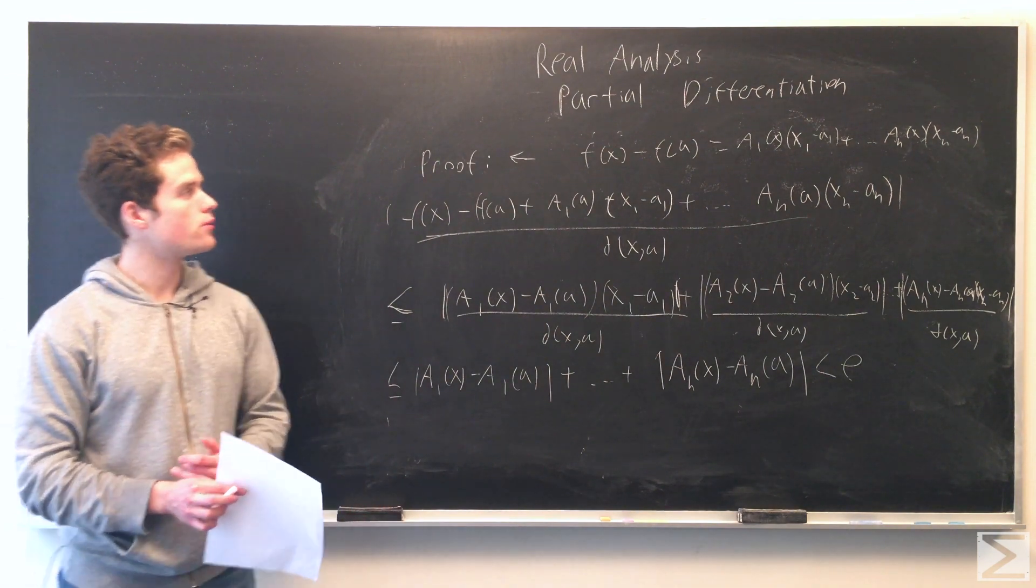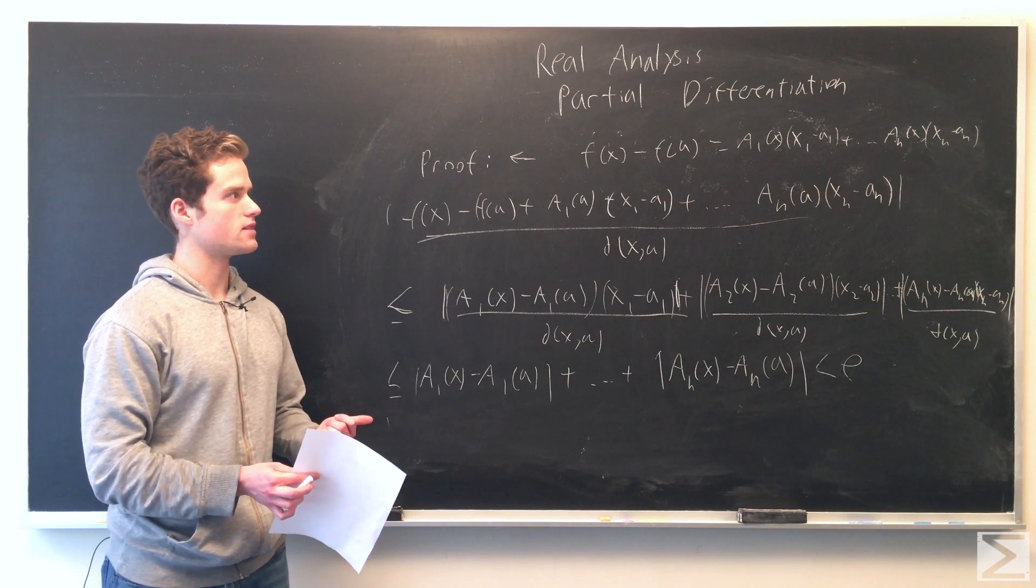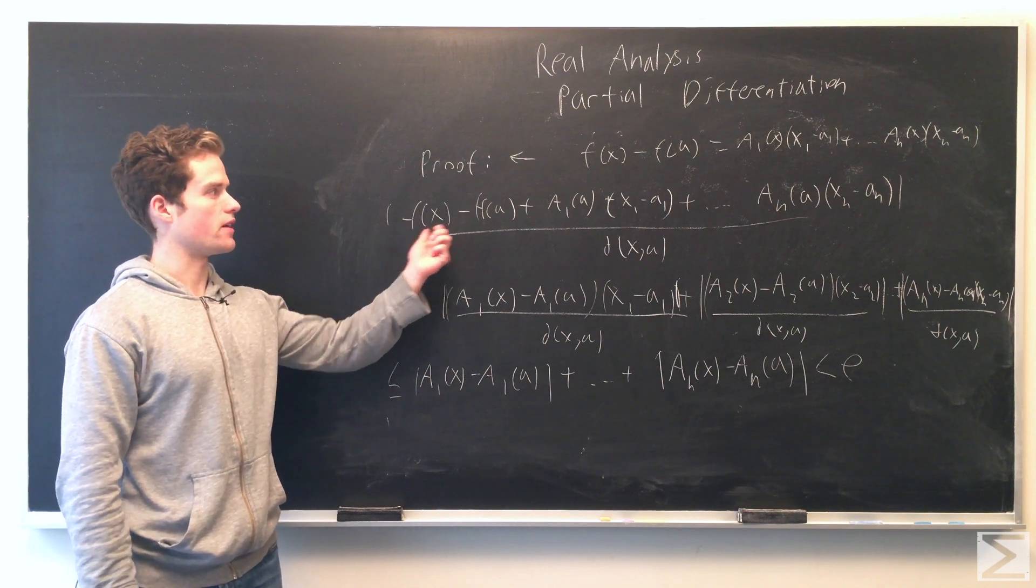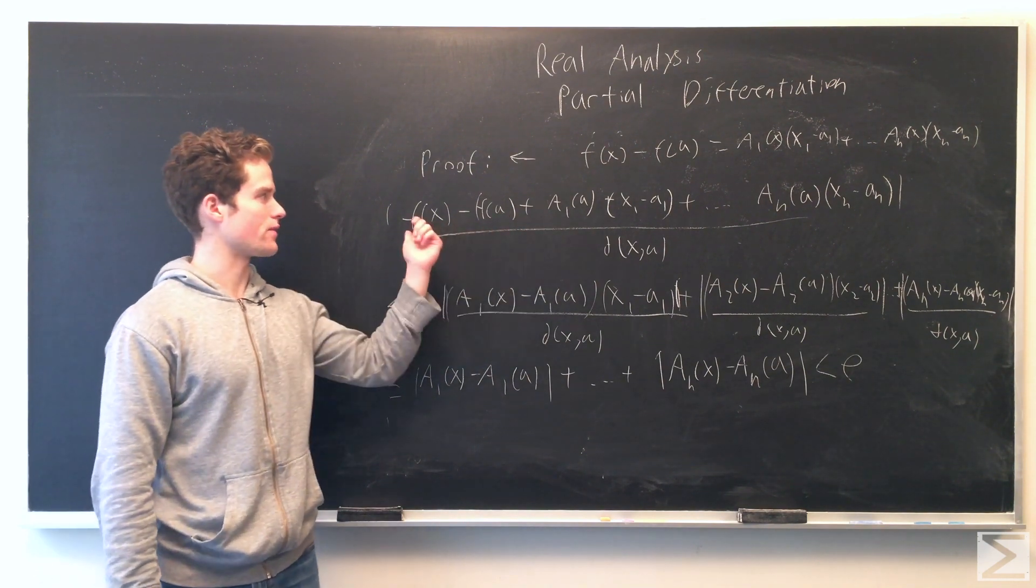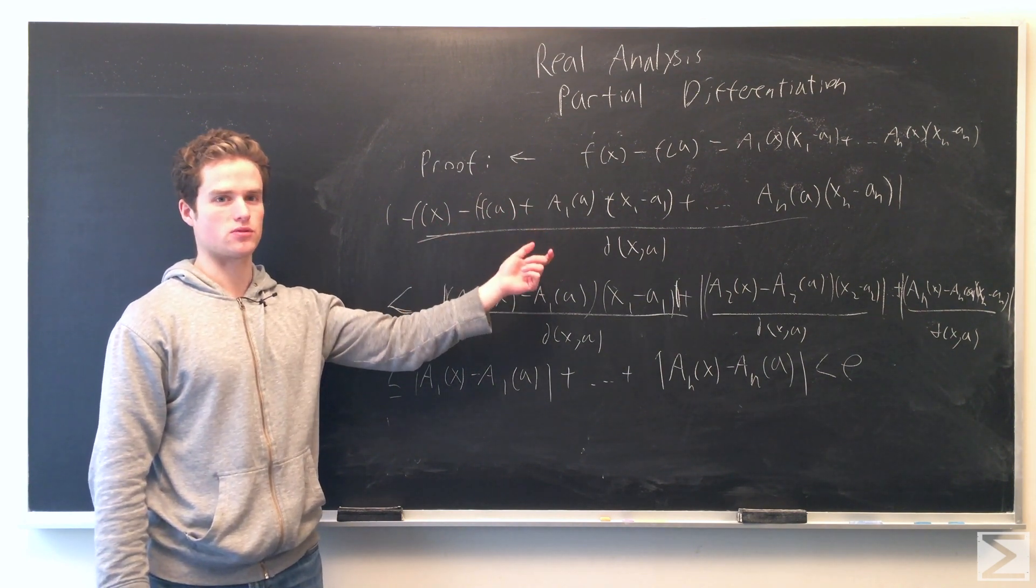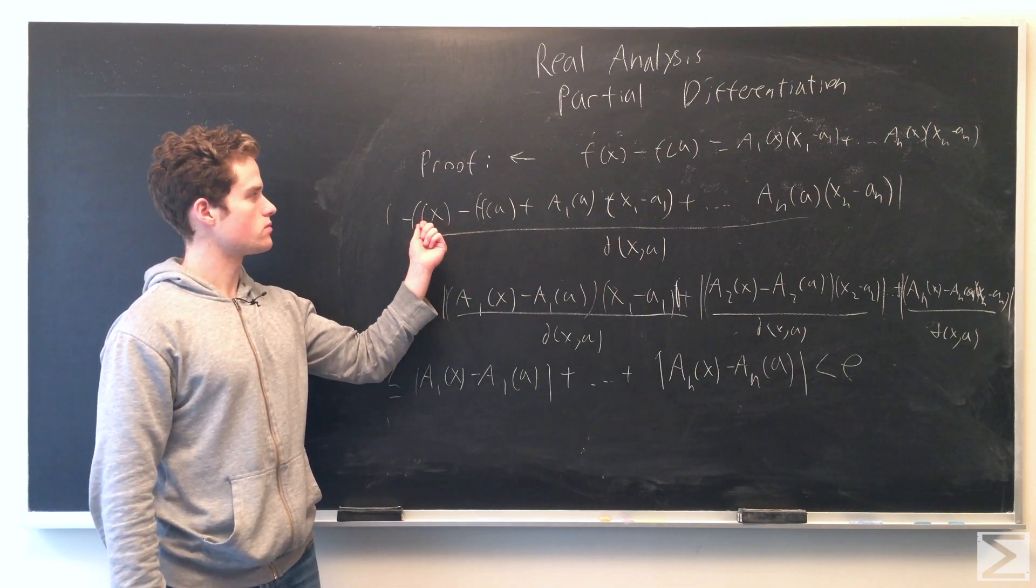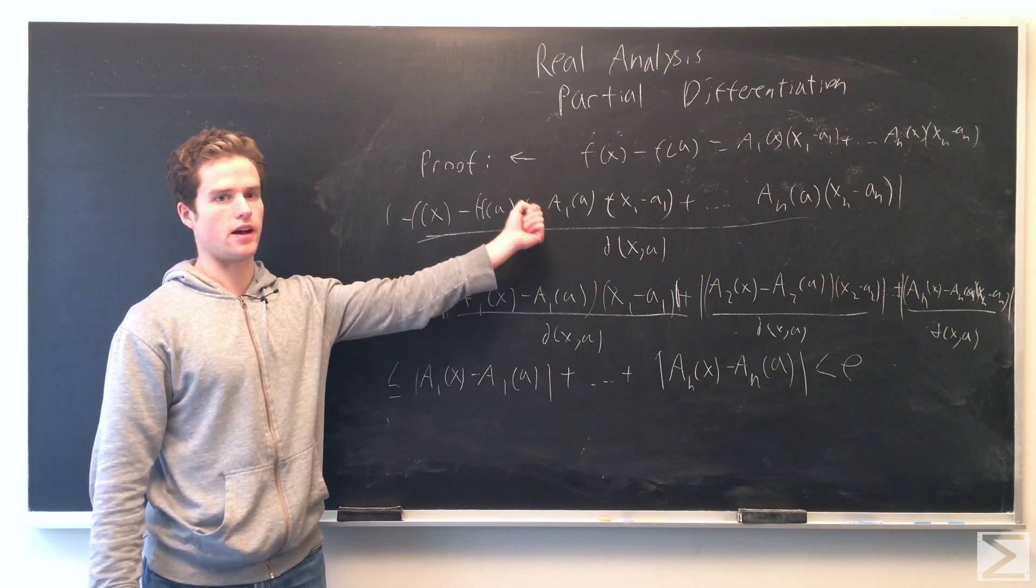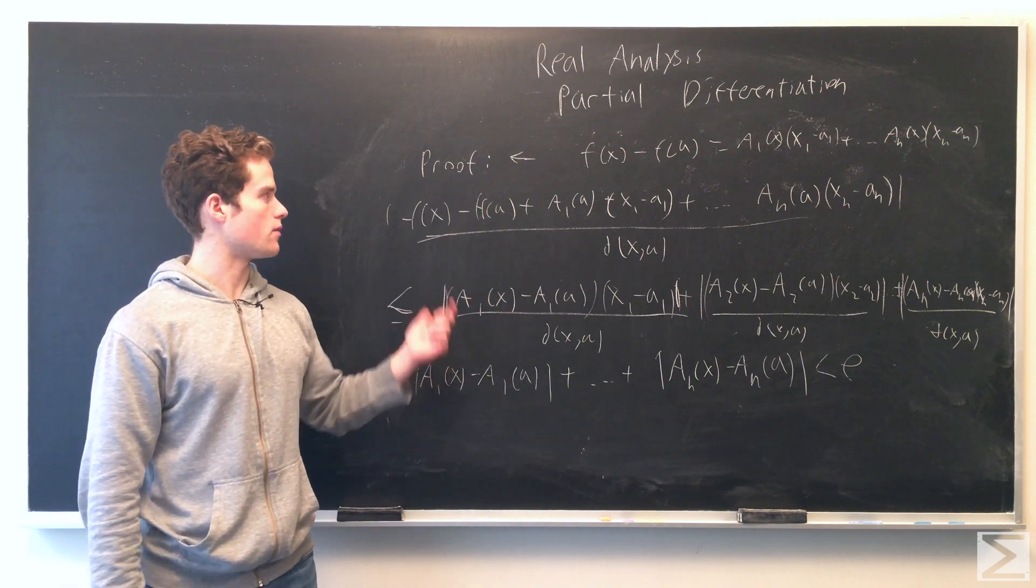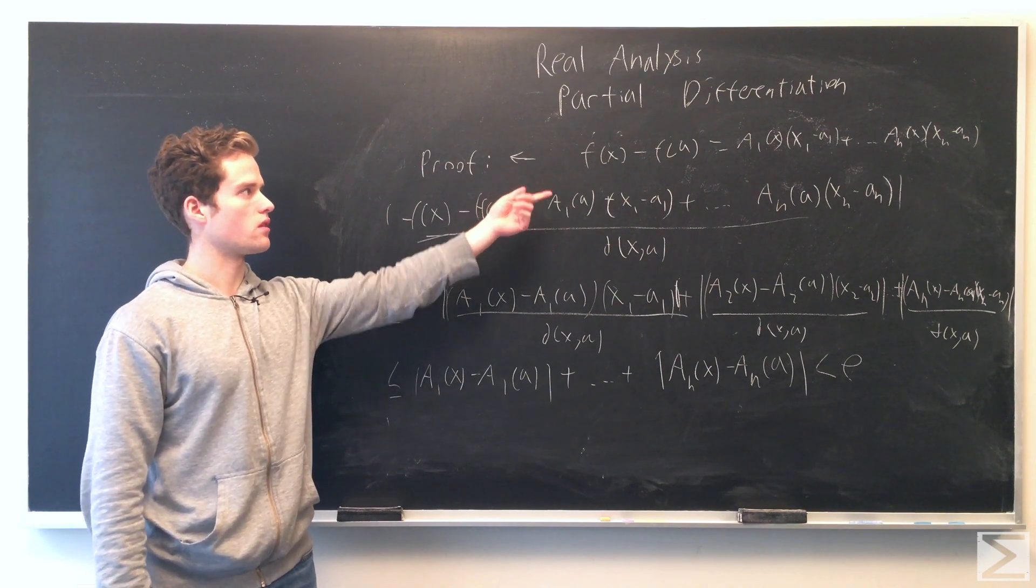To prove the other direction, we assume we have some a_i(x) such that f(x) - f(a) equals sum of a_i(x)(x_i - a_i). We want to find constants c such that [f(x) - f(a) + c_1(x_1 - a_1) + ...] over d(x,a) approaches 0 as x approaches a. By manipulating, we break up f(x) into our sum of a_i(x), and f(a) cancels with f(a).